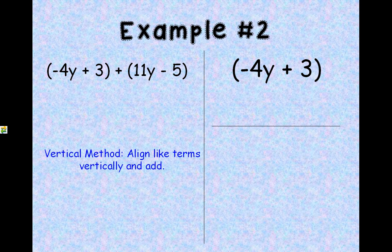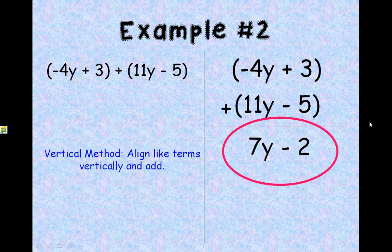So I'm going to bring my negative 4y plus 3 over and then under that, making sure like terms align up, my y's are with my y's and my constants are with my constants. We'll bring down 11y minus 5. Okay, we have plus 3. We're going to start with the right. Plus 3 minus 5 is going to give me a minus 2, a negative 2. You can do plus a negative 2. It's up to you whatever you feel more comfortable with. And then you have a negative 4y plus 11y, which would give me 7y. And that is our answer.